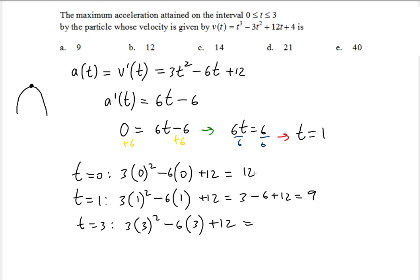So far 12 is the maximum. Let's check the third one: 3(3)² minus 6(3) plus 12, that gives you 27 minus 18 plus 12, and that gives you 39 minus 18 which equals 21.